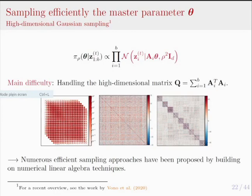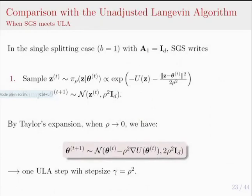A quick comparison with the unadjusted Langevin algorithm: in the single splitting case where B=1 and A_1 equals the identity, the split-Gibbs sampler has two steps, and when rho is sufficiently small, the update for Z corresponds to one step of the unadjusted Langevin algorithm with step size gamma equal to rho squared. This suggests a natural comparison between the biases of ULA and the asymptotically exact data augmentation framework.